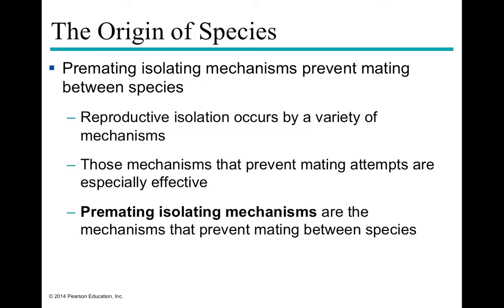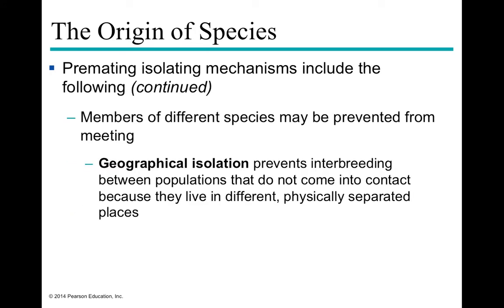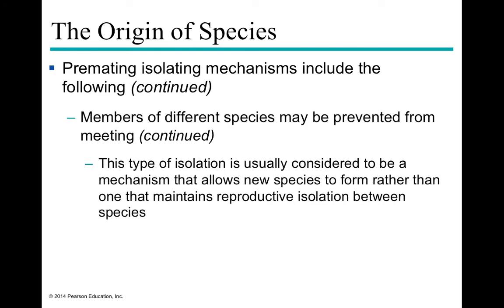Pre-mating isolating mechanisms prevent any physical mating event from occurring. The first is geographic isolation, meaning populations can't physically come into contact because they live in separate locations. This type of isolating mechanism usually allows speciation events to occur — species generally form when one population ends up on one side of a barrier and another population on the other side, with new species forming on either side. It generally leads to speciation rather than merely maintaining reproductive isolation.